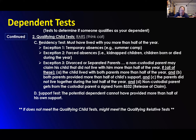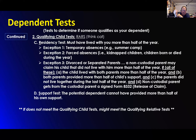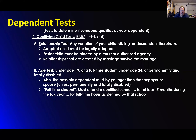The support test: the dependent can't have provided more than half of their own support. The question is: did you supply more than half of their support? If you did, you are their qualifying person. They have it as RARS — R-A-R-S — because it's the relationship test. Was it your child, sibling, or one of their kids?